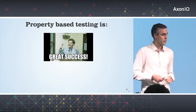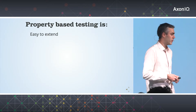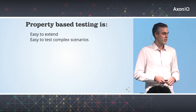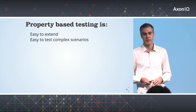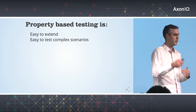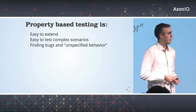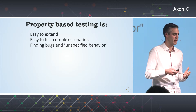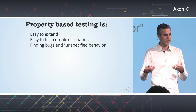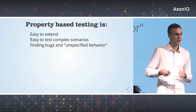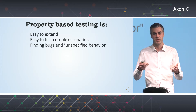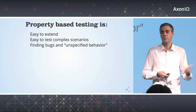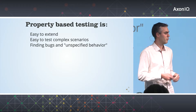In the end, property-based testing gives you a way to build integration tests for your application that are easy to extend. It scales linearly with the number of commands you have. It's easy to test complex scenarios because the scenarios are created at random, and you can specify how long you want these scenarios to be. It helps you find bugs and unspecified behavior — because you have one interpretation of the specs in the actual implementation and another in your reference model. Wherever these things don't align, there might be a bug or unspecified behavior. For example, can you pay a cart before you added any products? This will force you to think about such cases.